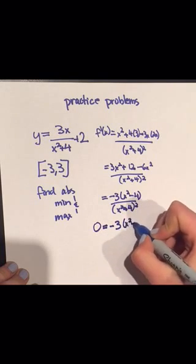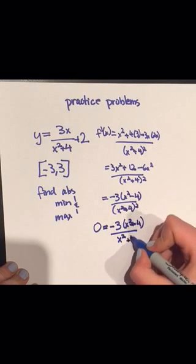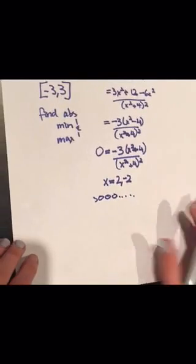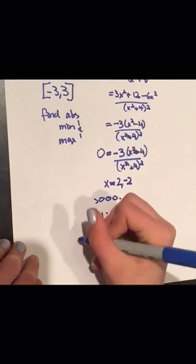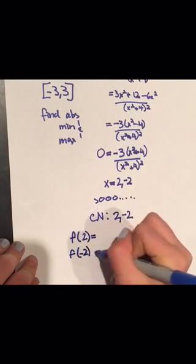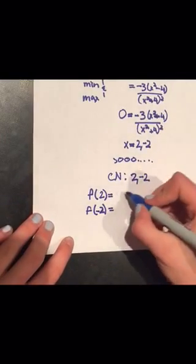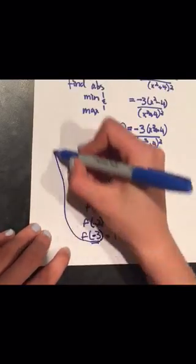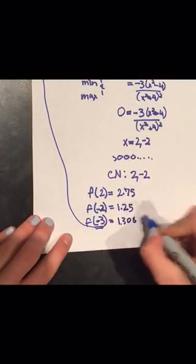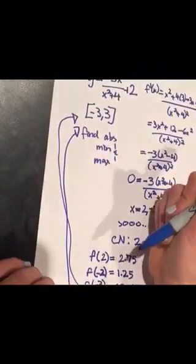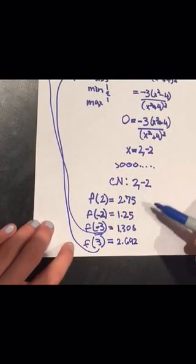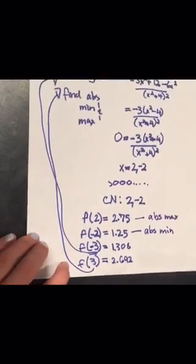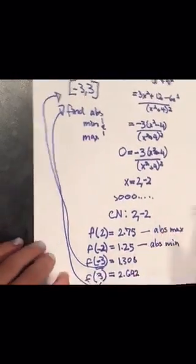Our critical numbers are going to be where f' equals 0 or is undefined. For this function, that's going to be x equals 2 and x equals negative 2. The next step is to evaluate the function at the critical numbers, so we evaluate f at 2 and f at negative 2. Now we evaluate the function at the endpoints, so at negative 3 and at 3. The final step is to compare these four function values. We see that f of 2 is the absolute maximum because that is where it is the greatest, and f of negative 2 is the absolute minimum because that has the lowest value.